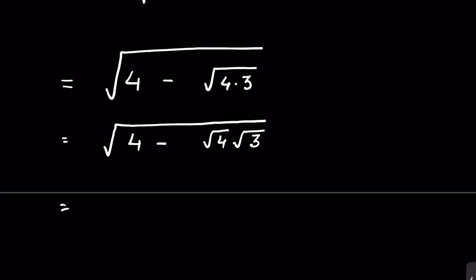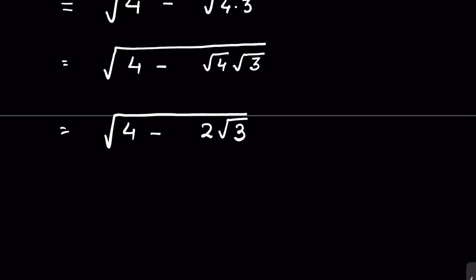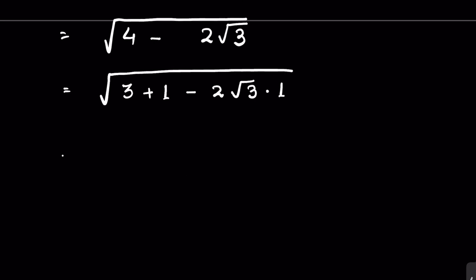So the expression becomes √(4 minus 2√3). Now we rewrite 4 as 3 plus 1, giving us √(3 plus 1 minus 2√3 times 1). We note that 3 can be written as (√3)², since the square root and the square cancel each other.